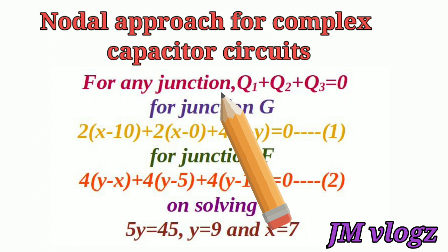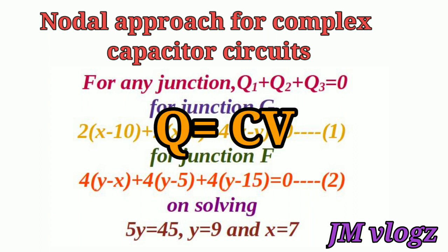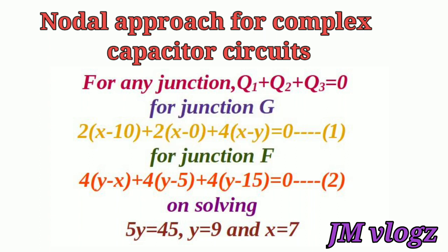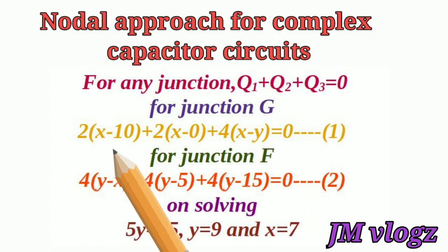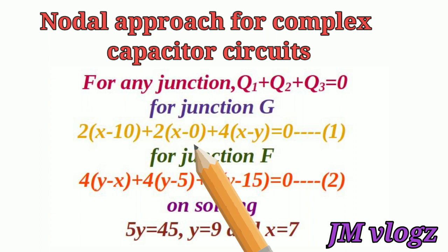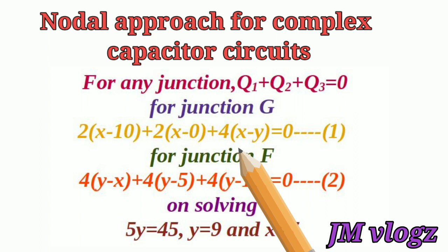The total charge at any junction equals zero, meaning Q1 plus Q2 plus Q3 equals zero. We know the expression for charge Q as C times V. Applying the conservation equation at junction G: the capacitance is 2 microfarad and the voltage difference is X minus 10, giving 2(X − 10) plus 2(X − 0) plus 4(X − Y) equals zero.